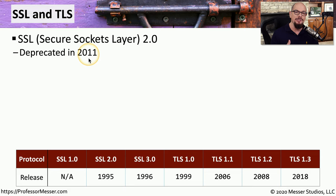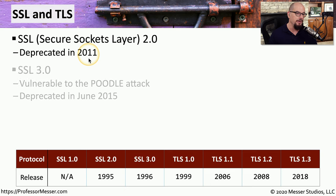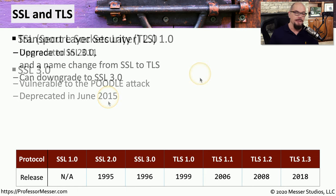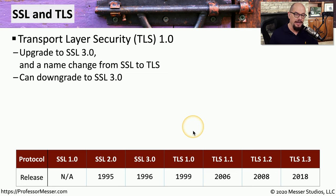Deprecated means that industry best practices are that you not continue to use this software going forward. SSL 3.0 was released in 1996 and was found to be vulnerable to a number of cryptographic vulnerabilities, so it was deprecated in June 2015.